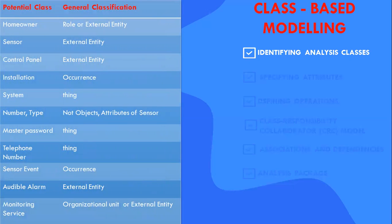We can process a number of potential classes and these potential classes are classified in general categories. For example, homeowner is a role or external entity, sensor is an external entity, control panel is an external entity. Installation is an occurrence. System is a thing or an object. Number or type are non-objects, attributes of sensors. Master password, telephone number are things. Sensor event is an occurrence. Audible alarm is an external entity and monitoring service is an organizational unit or external unit.